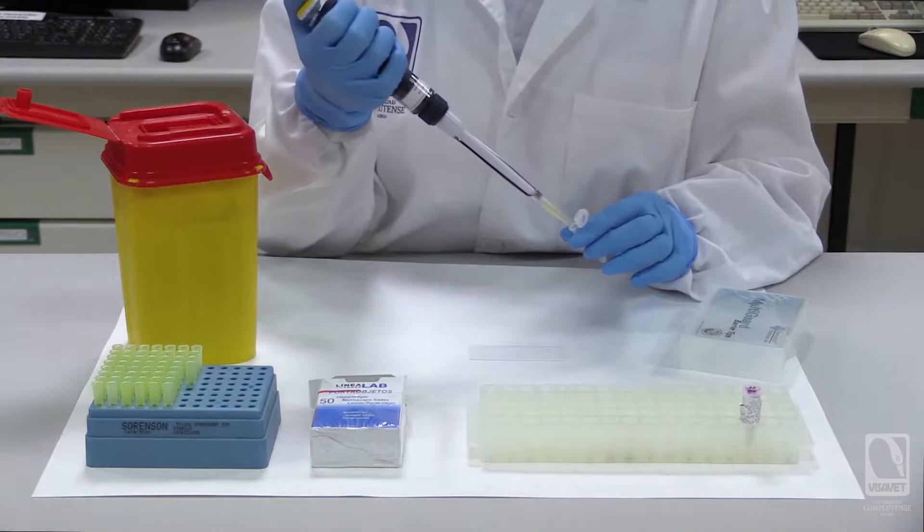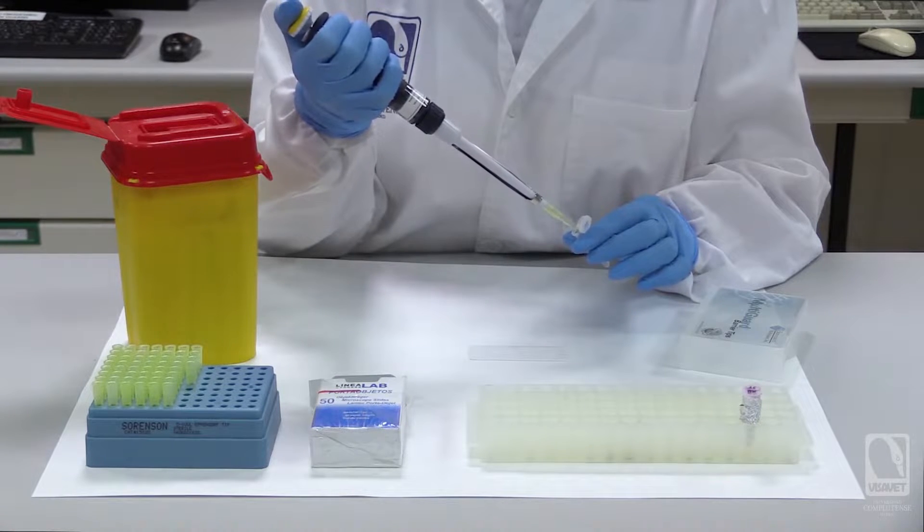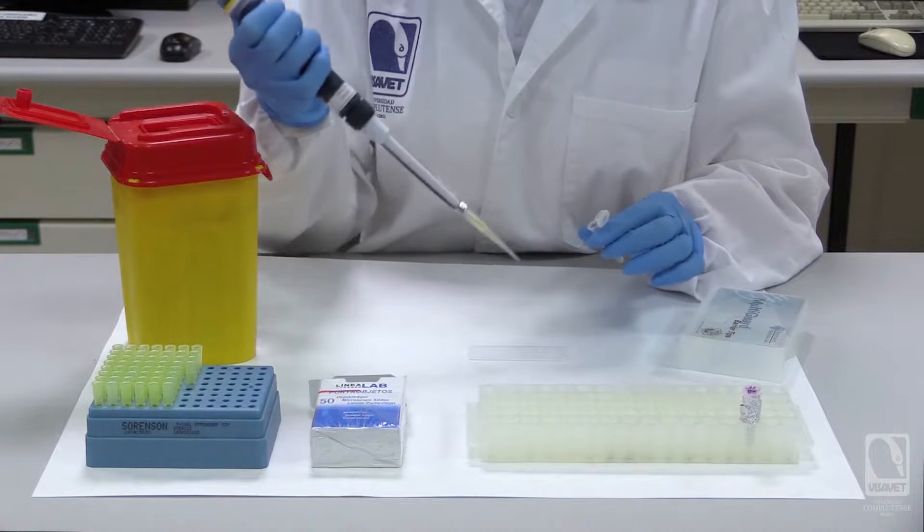The next step involves thorough homogenization of the serum by repeatedly moving the micropipette up and down. Once the homogenization is complete, we will carefully place a droplet of the homogenized serum onto the slide.